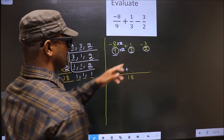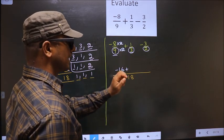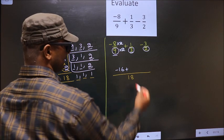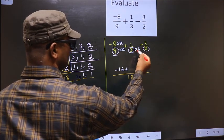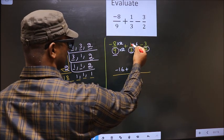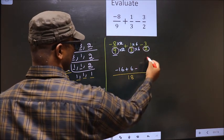Plus symbol as it is. Here we have 3. Here 18. Now 3 should change to 18. For that to happen, we should multiply by 6. Whatever number you are multiplying in the denominator, in the numerator also we should multiply by the same number. So we get 1 into 6, 6.